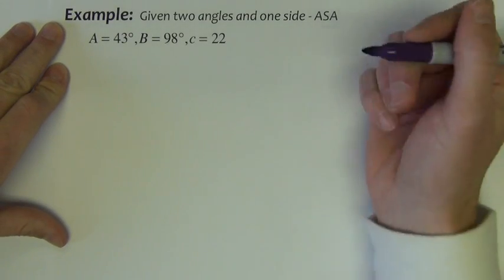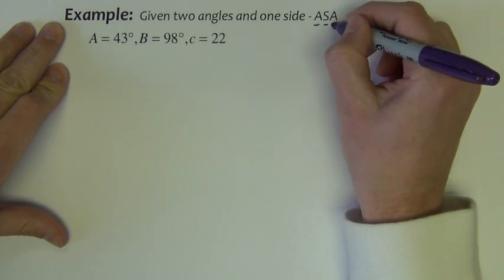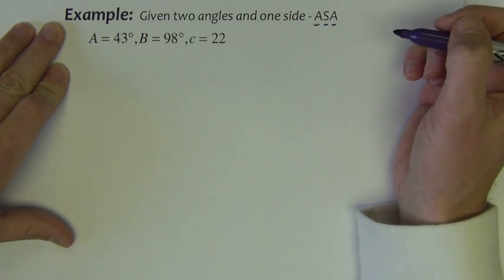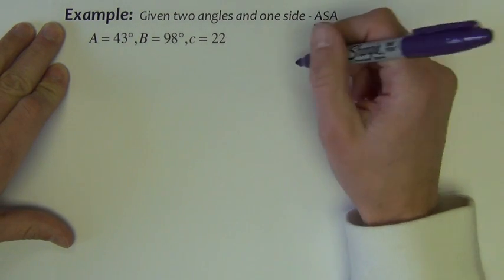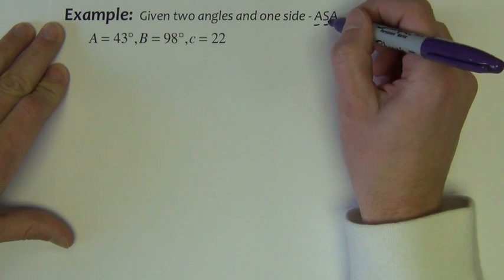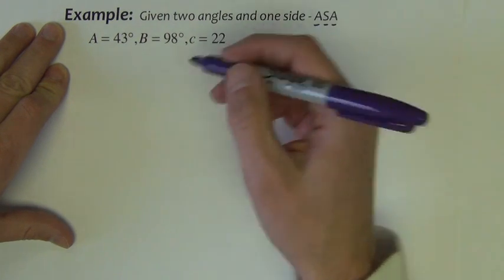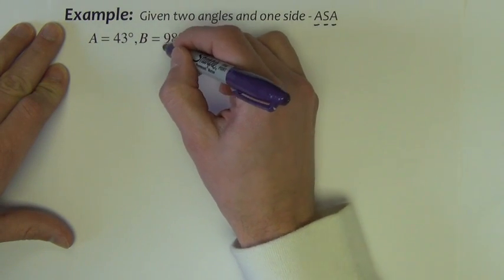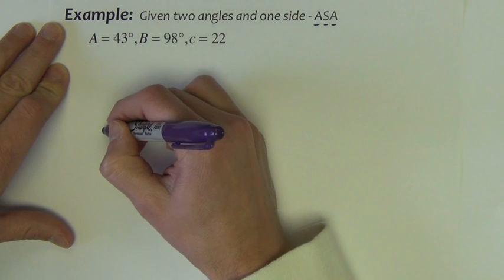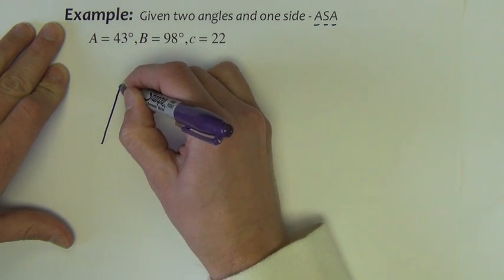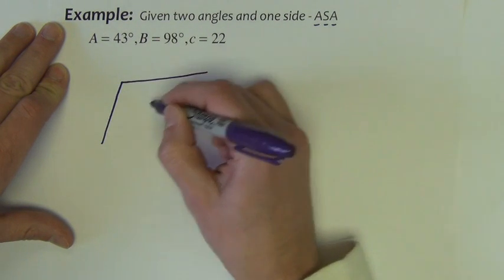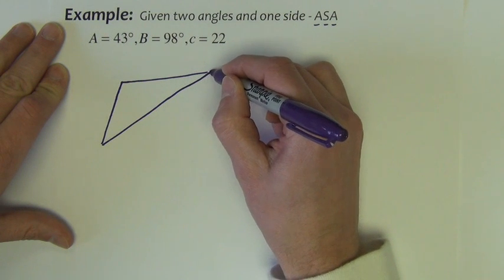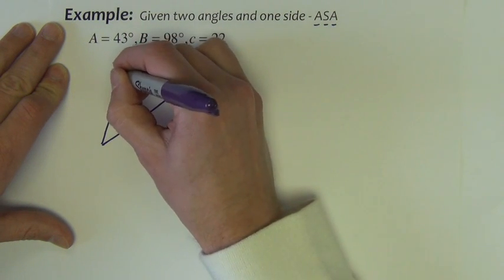Another example that we can do with law of sines is when we have an angle side angle setup. So again, we're going to be given two angles to start this problem, but the location of the side is going to be right between the two angles. So we'll see kind of what that looks like. Again, I noticed that I've got an obtuse angle, so I'm going to draw this so that I've got an obtuse angle.